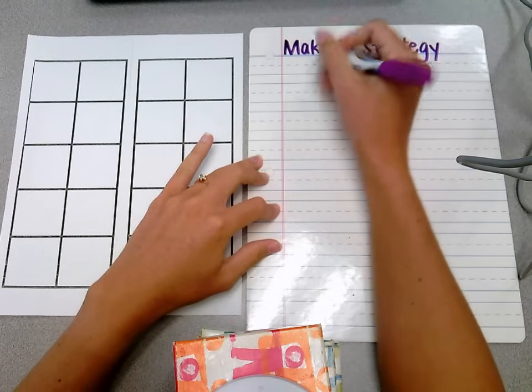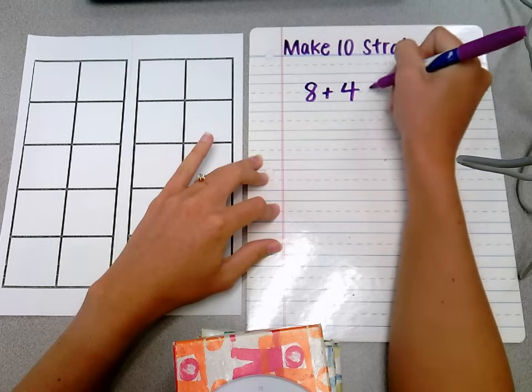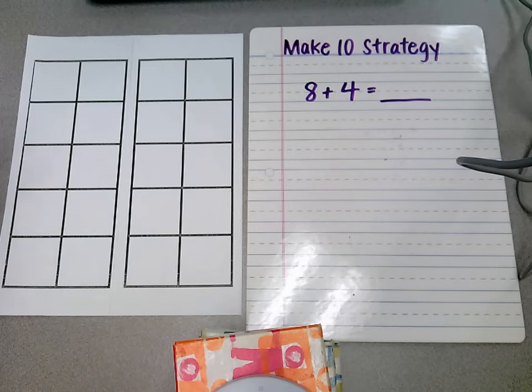So in our homework we saw problems that looked like this: 8 plus 4 equals. Now while this problem looks pretty simple right away and most students are able to just know it,